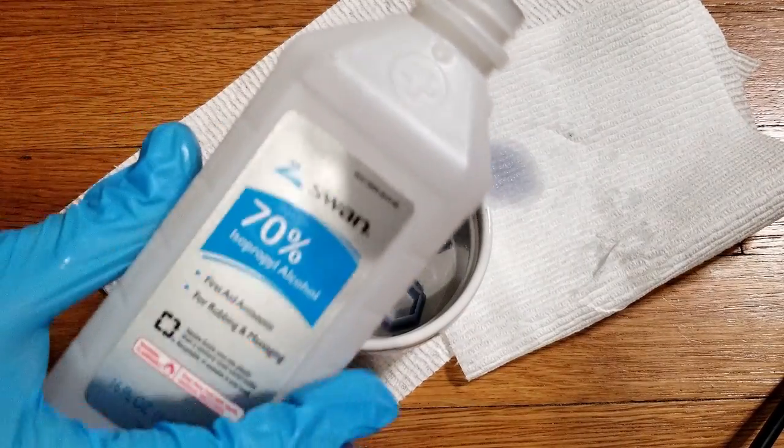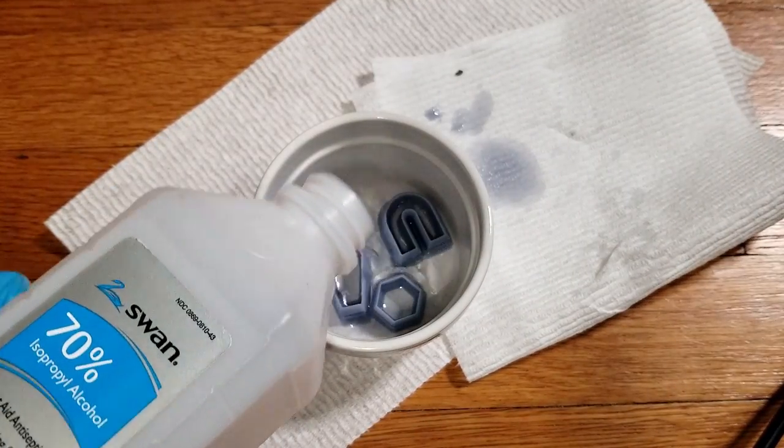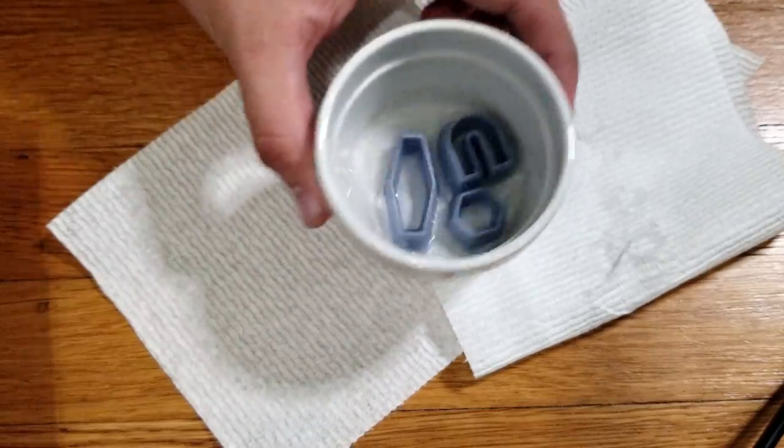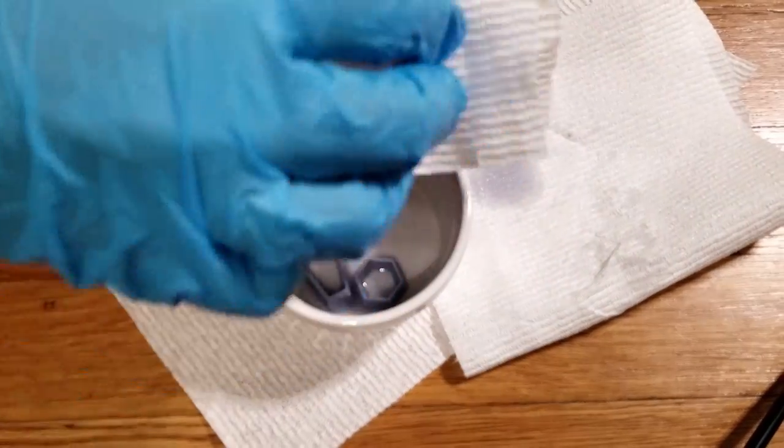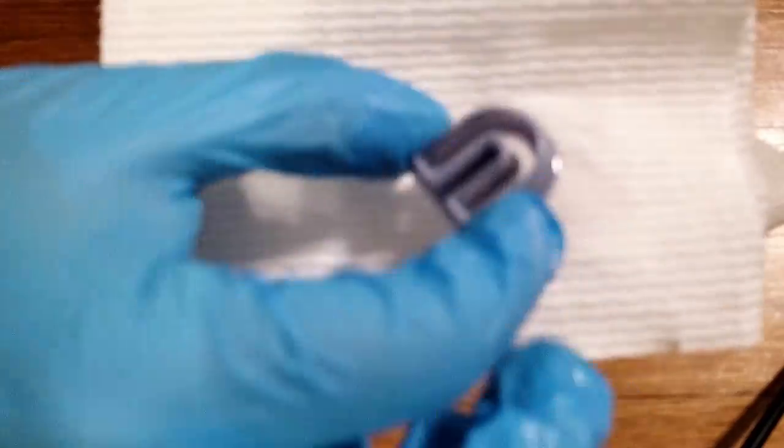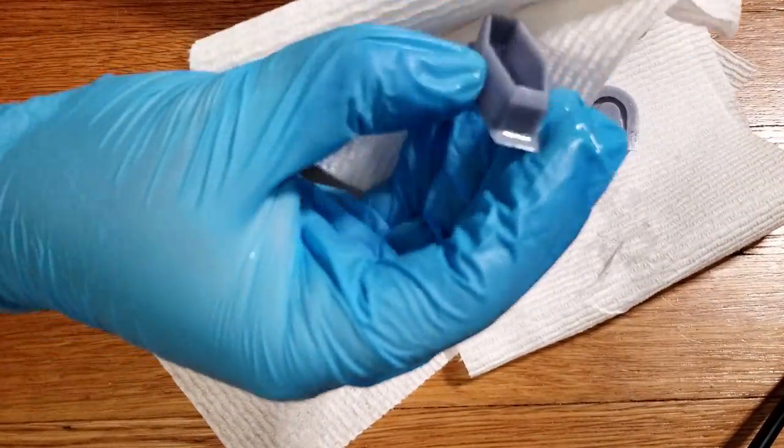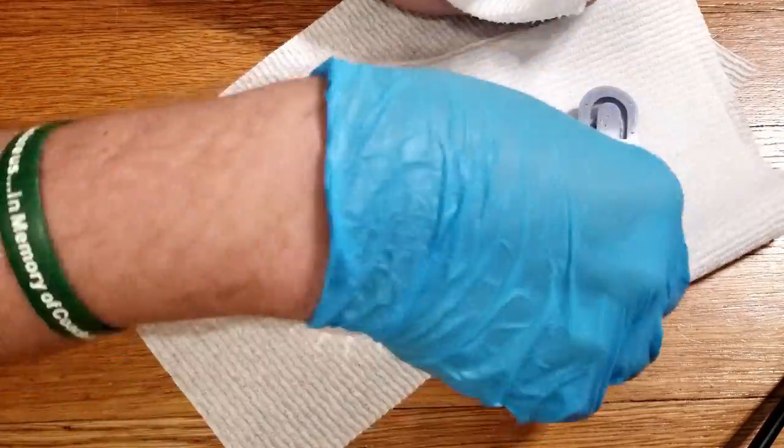Next we're just going to do a quick rinse in rubbing alcohol just to get all the leftover resin off before we cure it fully. I do see a small little nick in one of the cutters. We're going to just go ahead and test it anyways to see how it works. But I'd definitely love to do a reprint before we make a bunch of these earrings.